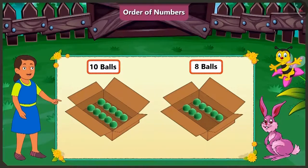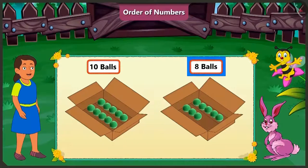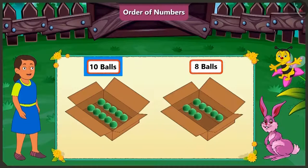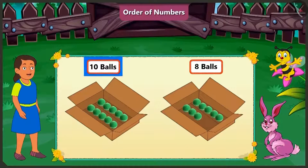While counting, which number comes first — eight or ten? Yes, while counting, eight comes first. So eight comes before ten. Absolutely right. Eight is smaller than ten. That is why eight comes before ten in the order of counting.